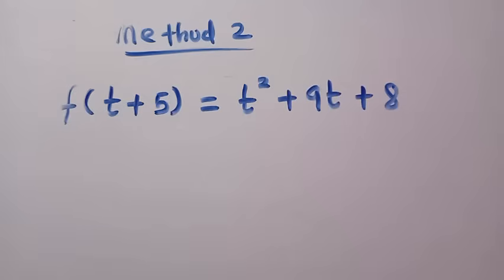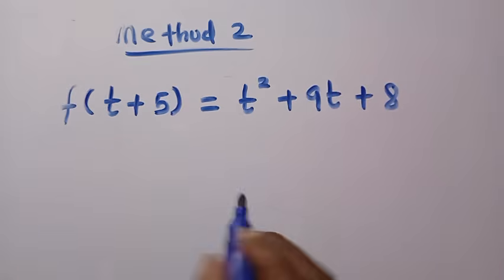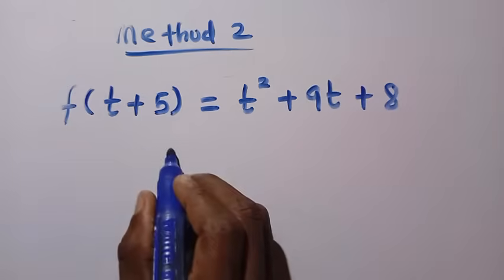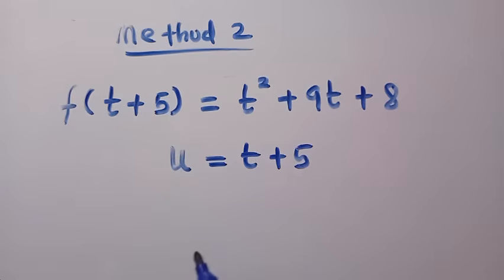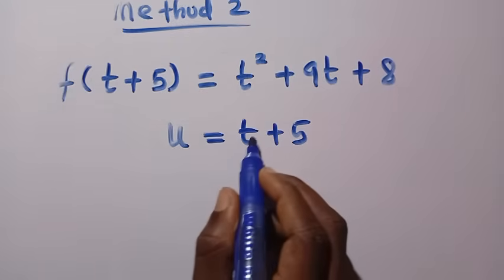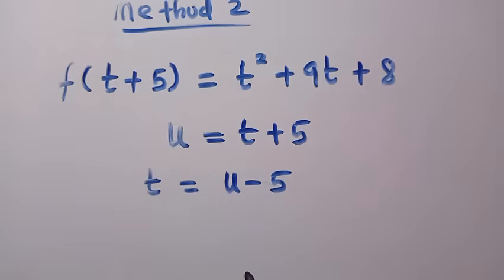There may be more than two methods — if you have another method, drop it in the comment box. Please don't forget to subscribe to this channel. For the second method, which I think is the simplest, we use substitution. Let u equal t+5, so anywhere we see t+5 we replace it with u. Making t the subject gives t equals u minus 5.